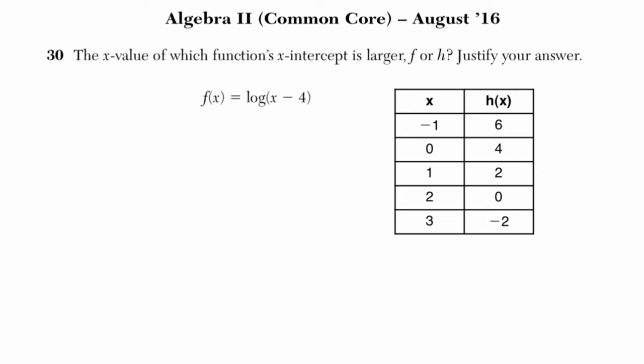So this problem is, for me, a function transformations problem. You might use a graphing calculator on this, but I think we can explain it fairly quickly using transformations. We're asked to find which of these two functions, h(x) or f(x), has a larger x-intercept, the point that crosses the x-axis.